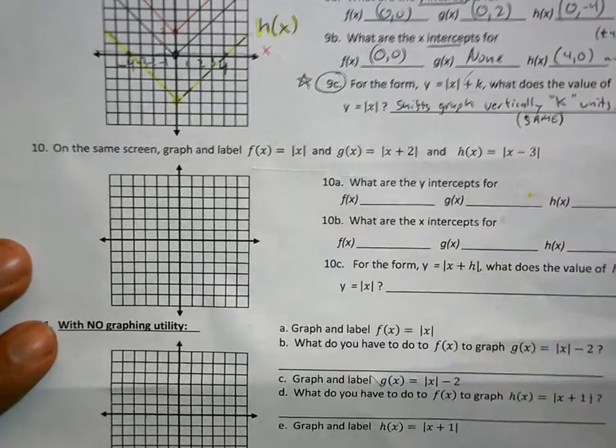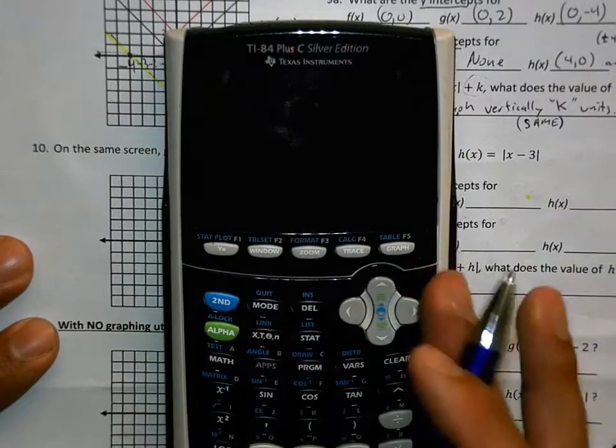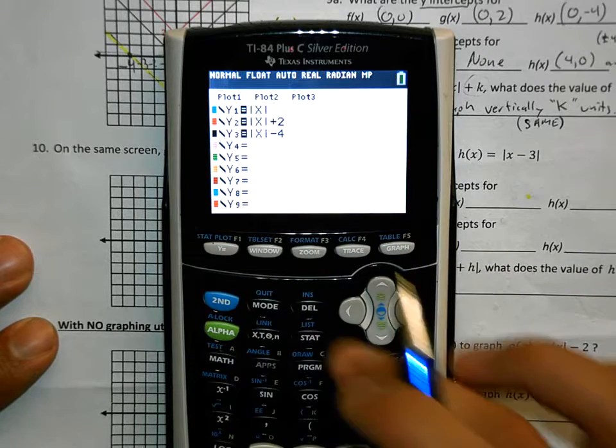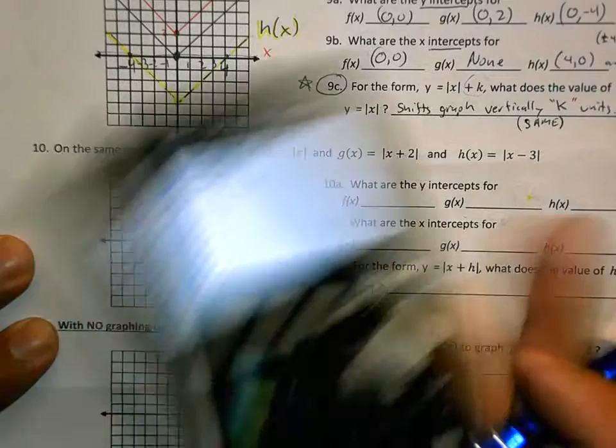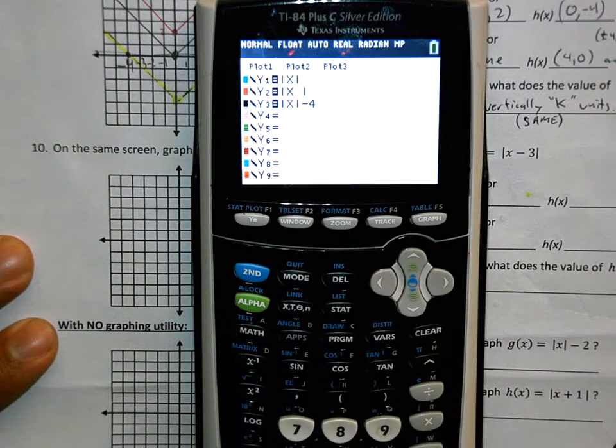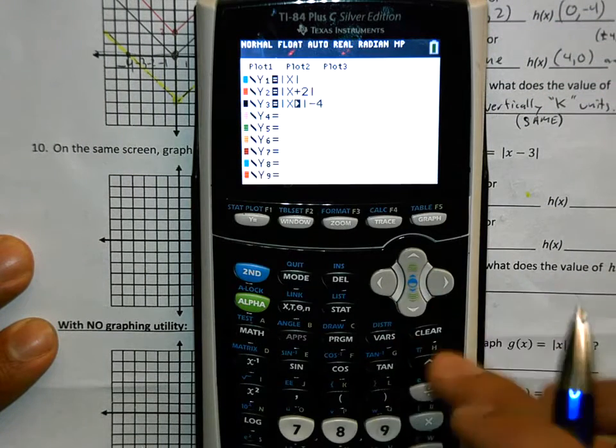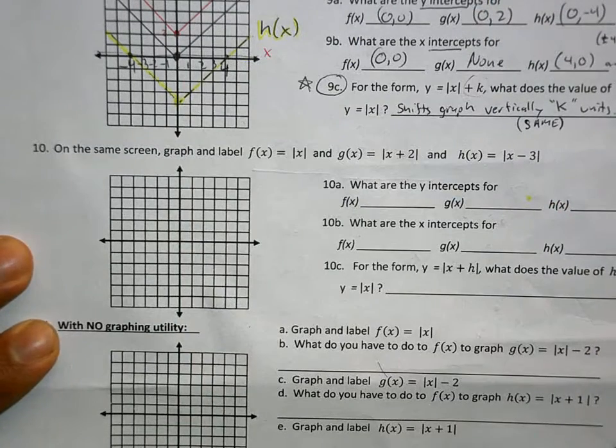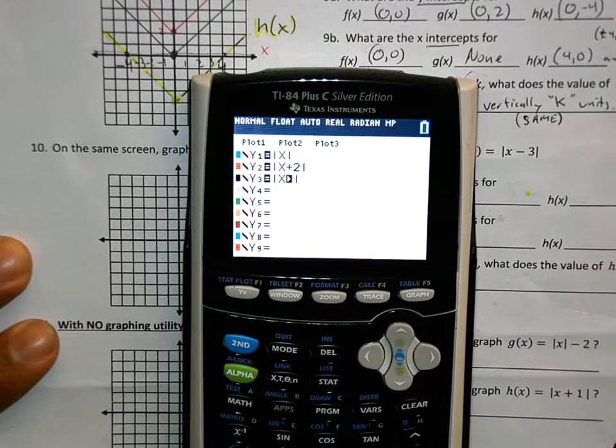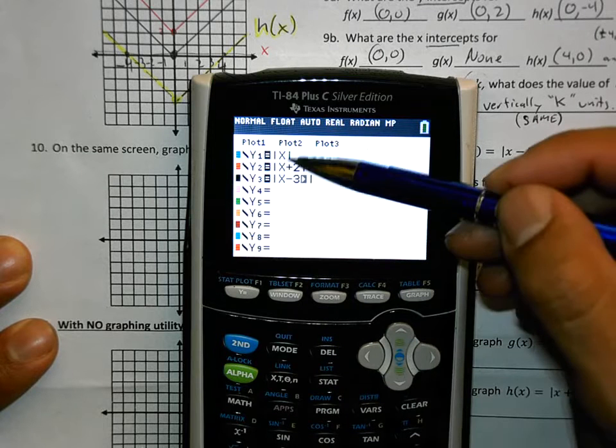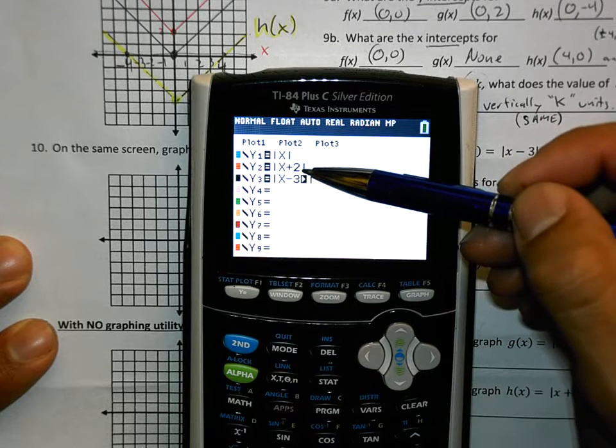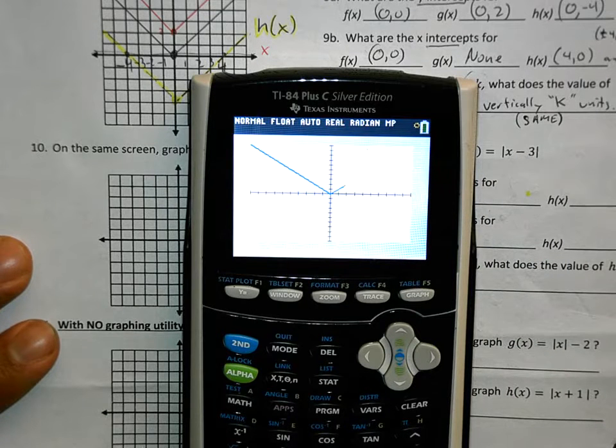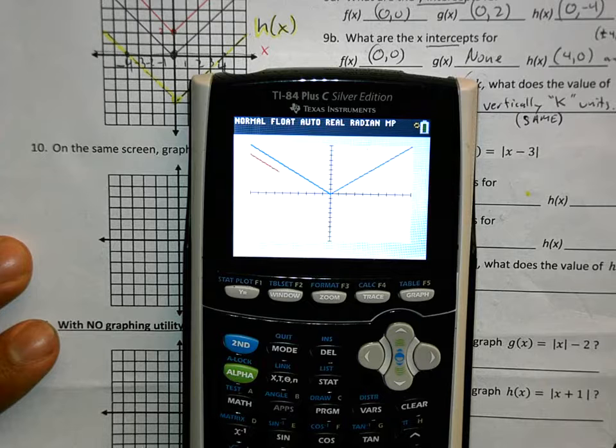So, I'm going to do number 10. I'm going to do it on the graphing calculator for you to see. The way 10 is different is that plus 2 is inside the bracket this time. Plus 2. And then I have to do x minus 3 inside the bracket this time. I'm just going to graph the first one in blue, the second one in red, and the third one in black.